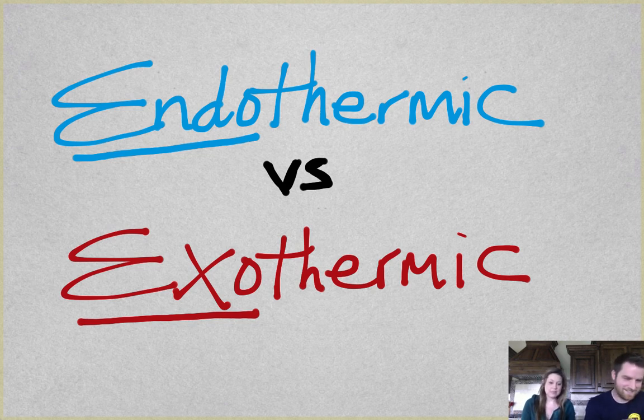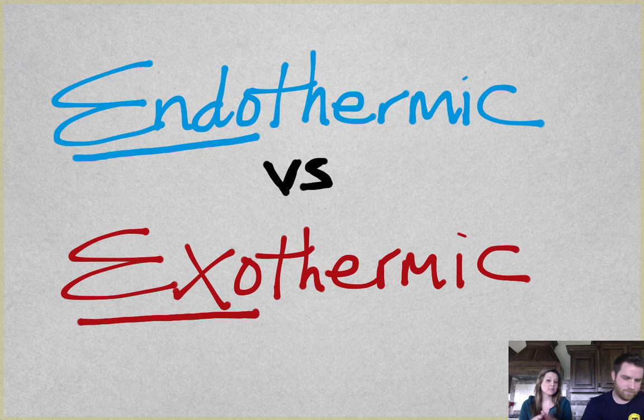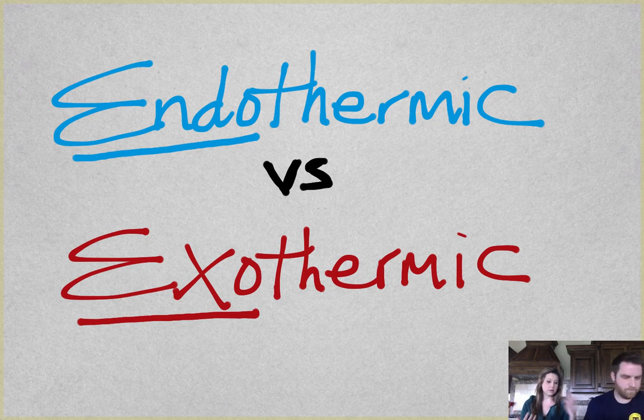First, what does endo mean and what does exo mean? Endo means inside, exo means outside. So like an exoskeleton on a bug is the outside skeleton, or when you exhale, you breathe out. So remember, endo in, exo out.